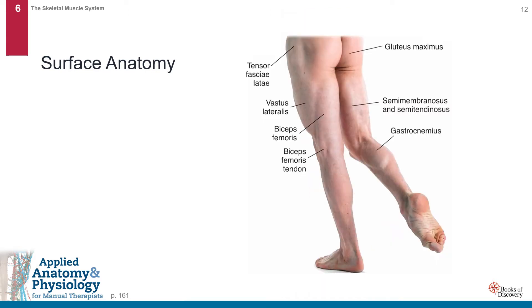From the posterior view, beginning most superiorly on the left-hand side, we see the tensor fasciae latae, the vastus lateralis, the biceps femoris and the biceps femoris tendon. Most superiorly on the right-hand side, we see the gluteus maximus, followed by the semimembranosus and the semitendinosus. We also see the gastrocnemius.